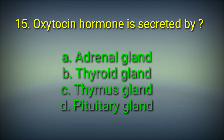15th question: Oxytocin hormone is secreted by — Options: A. Adrenal gland, B. Thyroid gland, C. Thymus gland, D. Pituitary gland. Answer: Option D. Pituitary gland. Oxytocin is secreted by the pituitary gland.